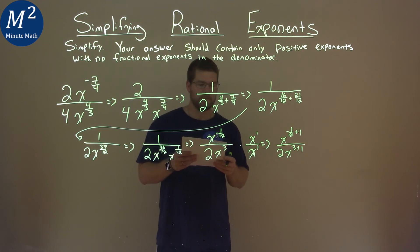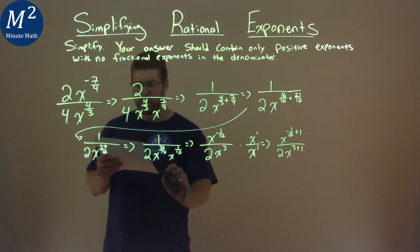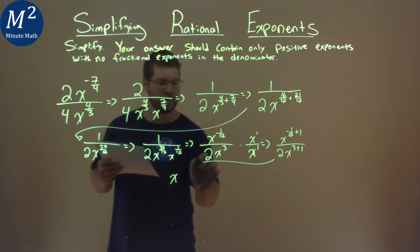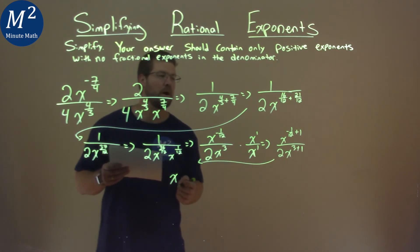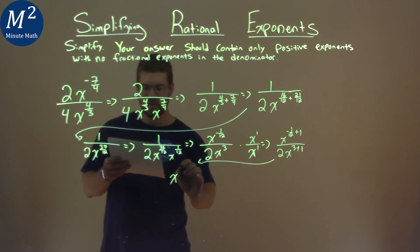And now it's a little easier. Keep going. Right here, we have x, finishing it out here. Negative 1 twelfth plus 1 is a positive 11 twelfths.